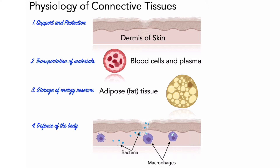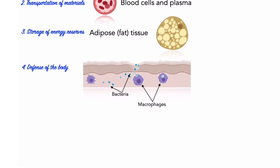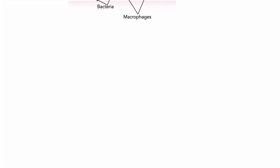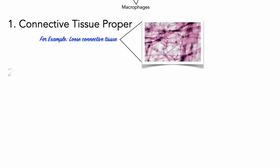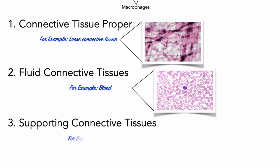The functions of different connective tissues become more evident when we consider the physical structures of different connective tissue types. Broadly speaking, based on their physical properties, connective tissues are classified into three major types: one, connective tissue proper; two, fluid connective tissues; three, supporting connective tissues.